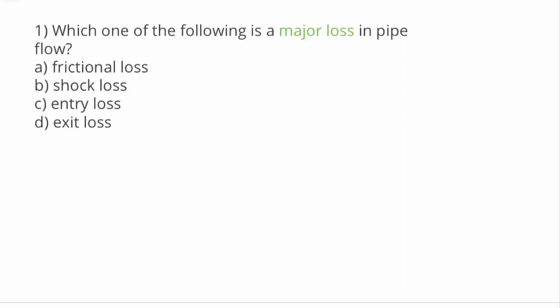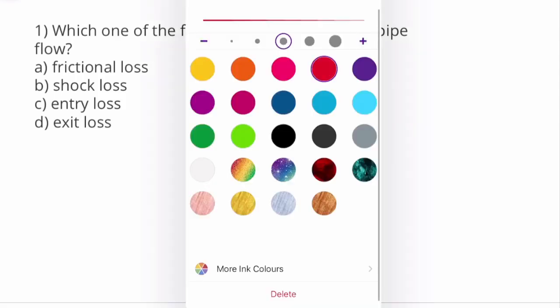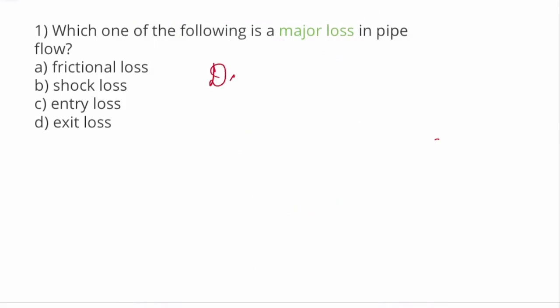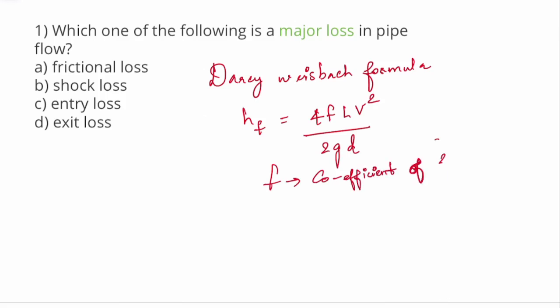So minor losses are a lot of types, but major loss is friction. So major loss value, we have a formula: Darcy-Weisbach formula. Head loss due to friction is equal to 4FLV² divided by 2gD. Now, this F is the coefficient of friction alone.